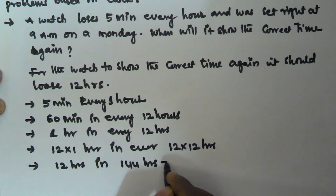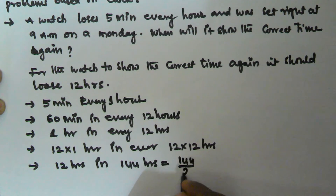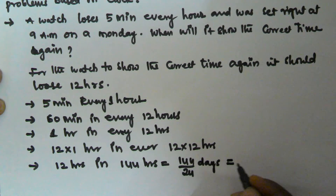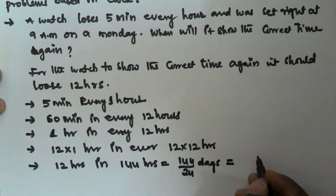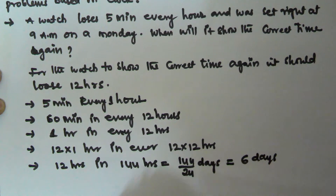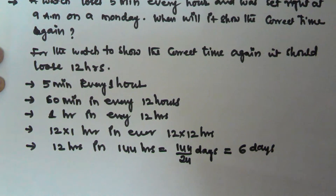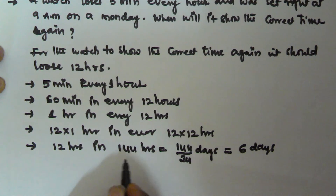144 hours is going to be equal to 144 divided by 24 days. We know each day is 24 hours. So 144 divided by 24 days is going to be equal to 6 days. The watch will lose 12 hours in 6 days.